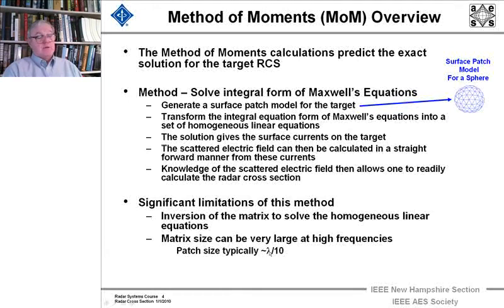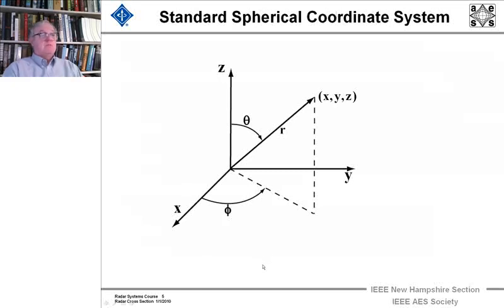And the patch size, as I said, is typically lambda over 10. Lambda over 8 will get you there. You're in a little trouble if you're down near lambda over 5. You're near the edge. But lambda over 10 is quite fine. But you can imagine if a target is relatively small, and you can make a relatively small number of pieces out of it that are those n pieces with an n by n matrix that you could invert it with today's computer technology. Then you can use this method and get an exact solution. So we have to do this inversion of the matrix to solve the homogeneous linear equations. And this says these matrices are going to be pretty darn large.